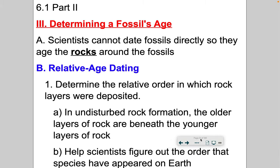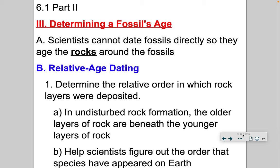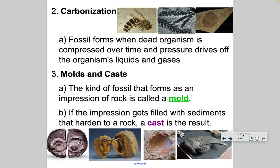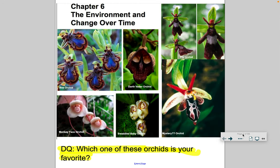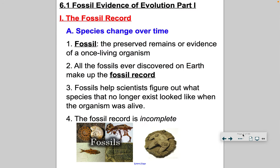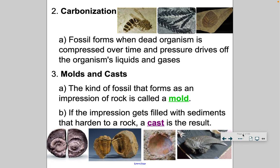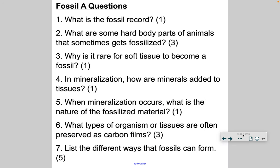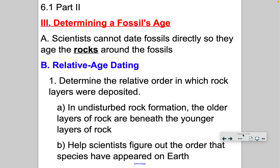In this lecture video, I am going to cover 6.1 part 2. In 6.1 part 1, we started to talk about fossils. We talked about the fossil record, what is a fossil, the five types of fossils, and then we ended with the fossil egg questions.